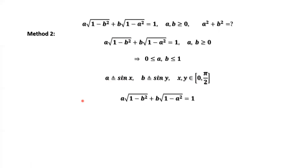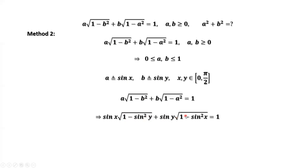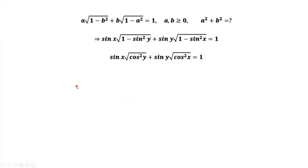This is the given equation. We replace a by sin x and b by sin y. The expression inside the square root, 1 minus sin²y, equals cos²y. Similarly, 1 minus sin²x equals cos²x. Because x and y are both in the first quadrant, sin y and cos x are both greater than or equal to 0. Therefore, we can cancel the square and the square root in both terms.